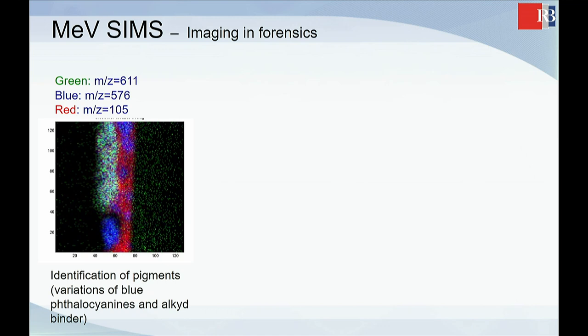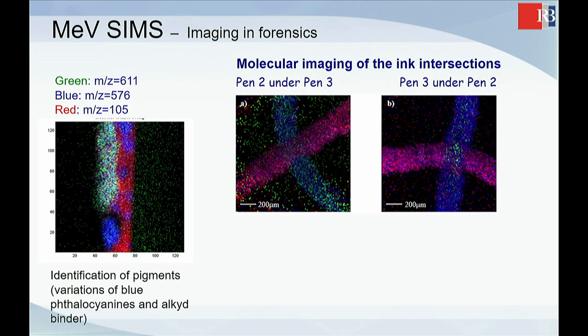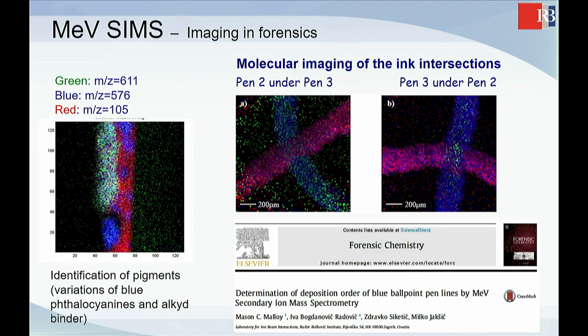For instance, this is imaging. This was one cross section of the pigments in painting. So you could see different masses that are connected to different areas of the sample. So one can find the binders or pigments from one single sample. Another application was that you could identify if you have two inks.